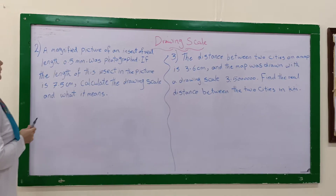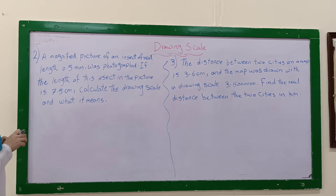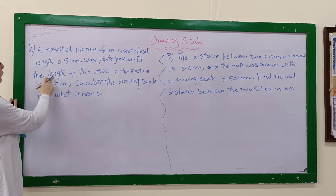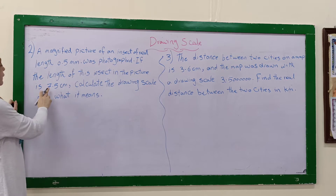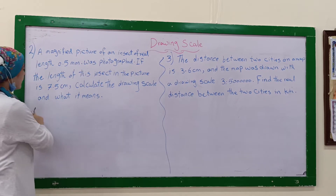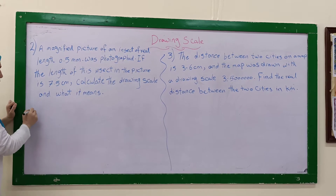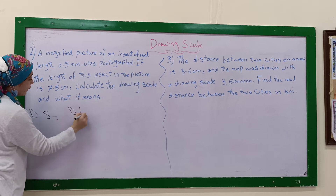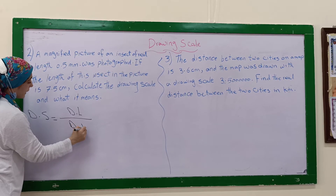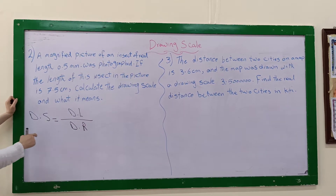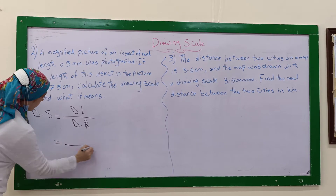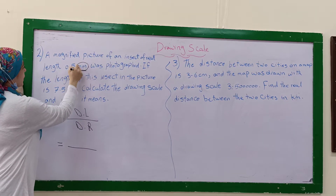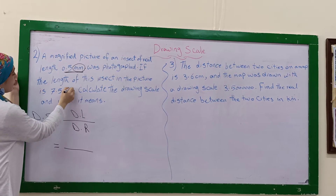Another example: a magnified picture of an insect of real length 0.5 millimeters was photographed. The length of this insect in the picture is 7.5 centimeters. Calculate the drawing scale and what it means. We set up the rule: drawing scale equals drawing length divided by length in reality. We check our units — the real length is in millimeters but the drawing length is in centimeters.